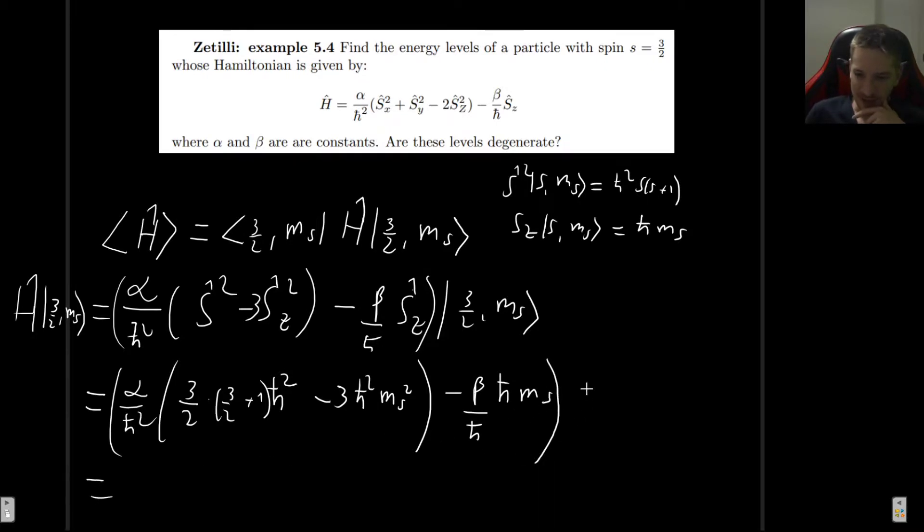Okay, so now let's multiply. And this is still acting, of course, on 3/2, m_s. So this is going to be alpha times this first part. This is 3/2 plus 1, which is 5/2, and times 3/2. This is going to be 15 divided by 4, and the h-bars will cancel out the h-bar squares.